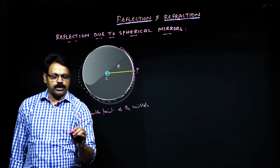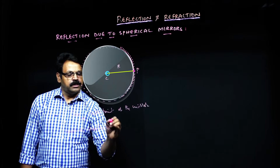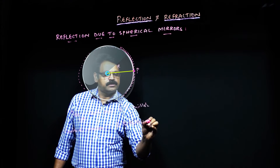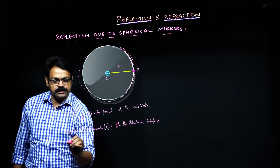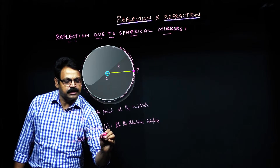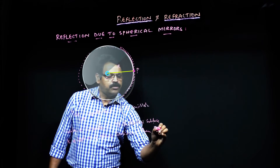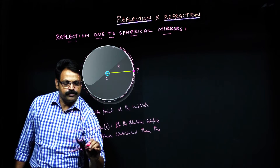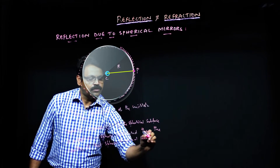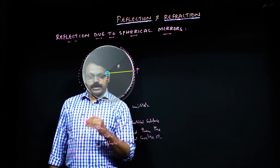Next, we look at the center of curvature, denoted by C. How can we define it? If the spherical surface is a part of a sphere, then the center of that sphere is called the center of curvature.